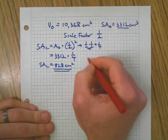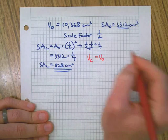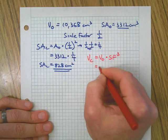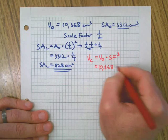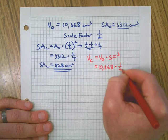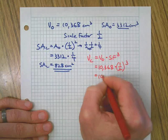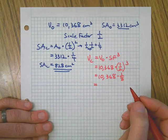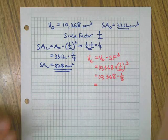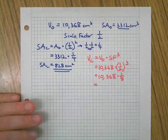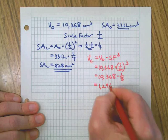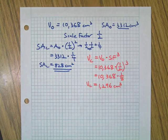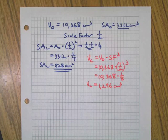Now for volume of the copy: it equals the volume of the original times the scale factor cubed. Our original volume was 10,368. Our scale factor is one half, and one half cubed is one eighth. So 10,368 times one eighth gives us 1,296 cubic centimeters — the volume of the copy. So much easier!